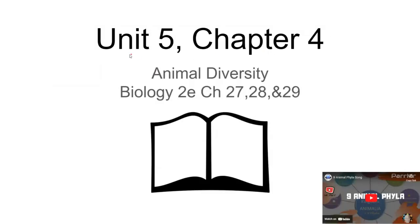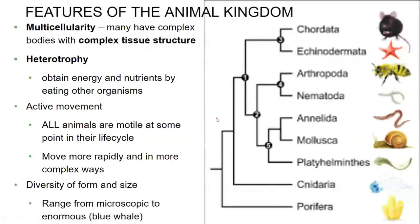Hi everyone, welcome to Unit 5, Chapter 4, where we will be discussing Kingdom Animalia and all the diversity within the nine major phyla of Kingdom Animalia. So, what does it mean to be part of the Animal Kingdom? Well, the Animal Kingdom is incredibly diverse. Of course, we have chordates like the mouse and even giant animals like the great blue whale. But we also have very small organisms like flukes and worms, as well as the sea sponge. Now, I didn't know that the sea sponge was actually classified as an animal.